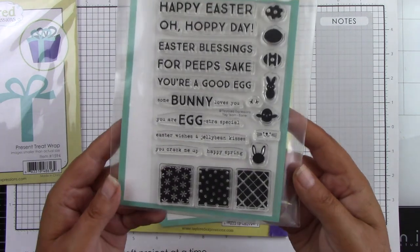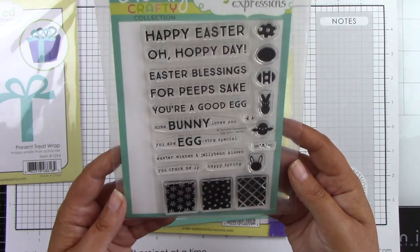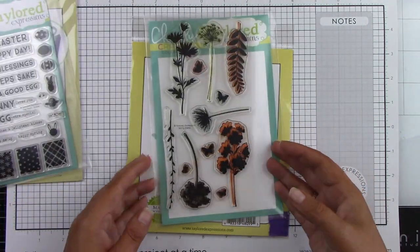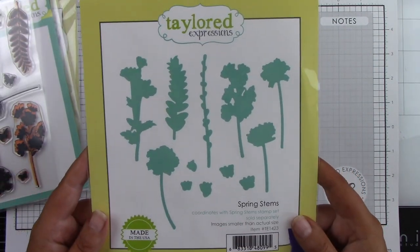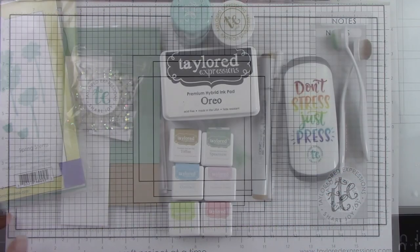Then the really cute Tag Team Easter, the Spring Stems stamp and coordinating die. Then I will be using some white rhinestones for embellishments.